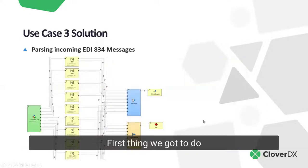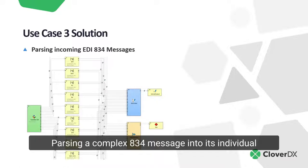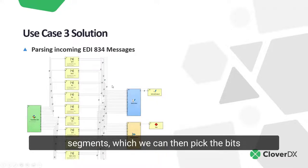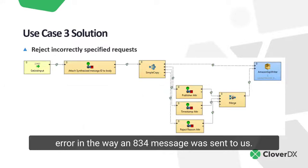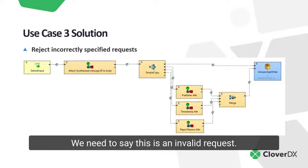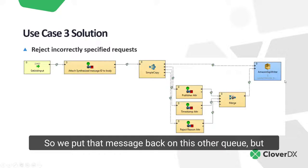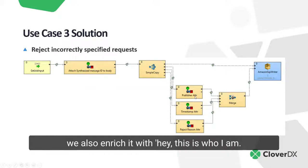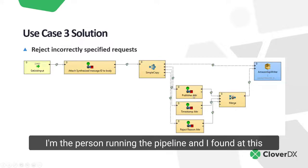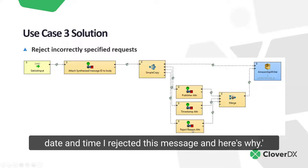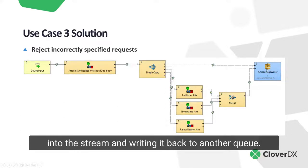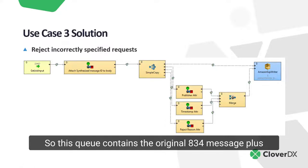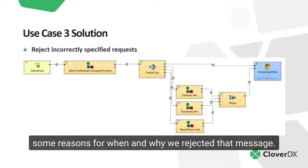If I dig in a little bit here to the invalid message processing — let me click there. First thing we've got to do is actually parse the 834 message. Here's our design tool parsing a complex 834 message into its individual segments, which we can then pick the bits out and write into an XML document that is much easier to deal with. If we find an error in the way an 834 message was sent to us, we need to say this is an invalid request. So we put that message back on this other queue, but we also enrich it with hey, at this date and time, I rejected this message and here's why. So we're adding this metadata to the message, merging it into the stream and writing it back to another queue. This queue contains the original 834 message plus some reasons for when and why we rejected that message.